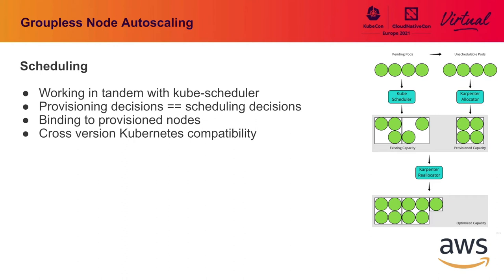Scheduling is also critical to the provisioning workflow. We work in tandem with the kube scheduler — we give it the first shot, and when it fails, we kick in. One key realization is that provisioning decisions are scheduling decisions. By picking a new node for pods to schedule onto, you are making a scheduling decision whether you like it or not. Because we're creating capacity directly, we can actually create the node objects ourselves: we make the create instance request, get an instance ID back, create the node object immediately, and then bind the pods immediately — enforcing the scheduling decision outside the kube scheduler loop.